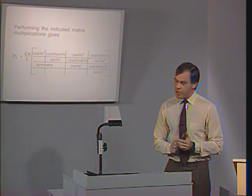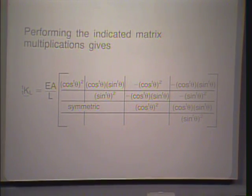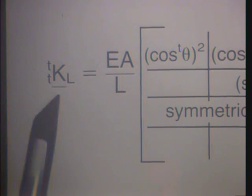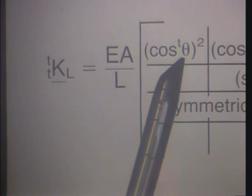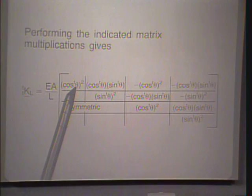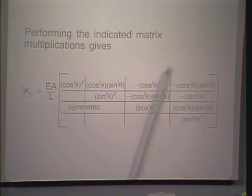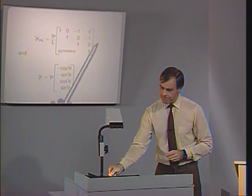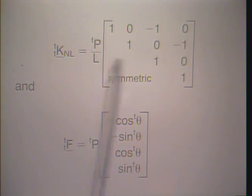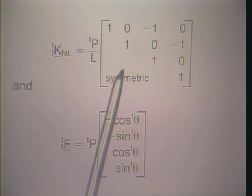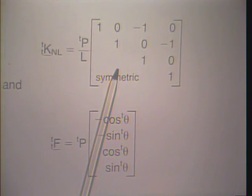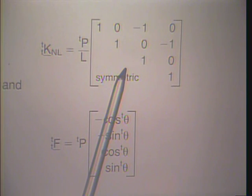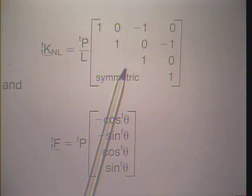Performing the indicated matrix multiplications gives the linear stiffness matrix — in fact, this is the same stiffness matrix used in linear analysis for an element oriented at angle theta to the global x-axis. The nonlinear strain stiffness matrix has tp over L multiplied by certain terms and is also symmetric, corresponding to the global coordinate frame. We notice immediately that this KNL matrix is in fact the same as the one we already had in the curled coordinate frame.